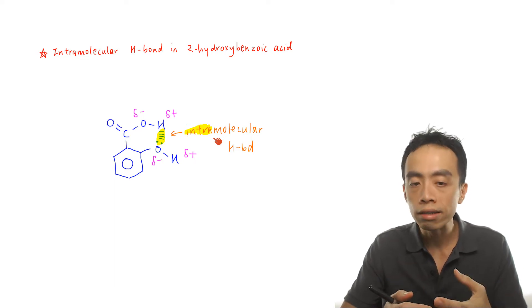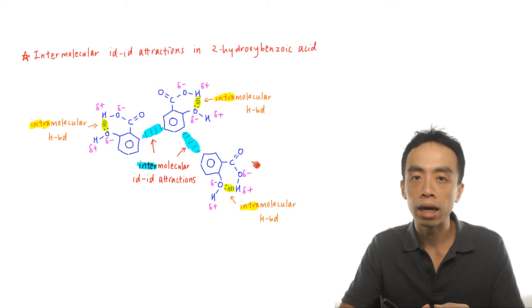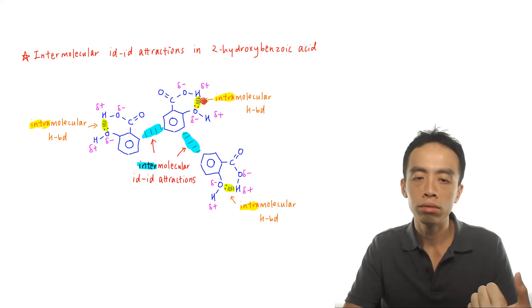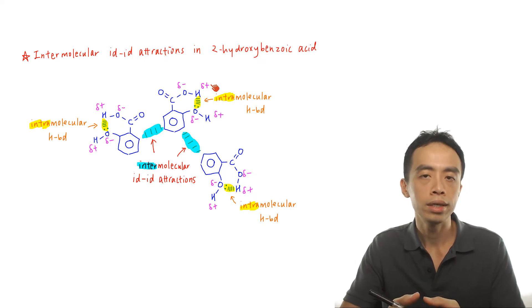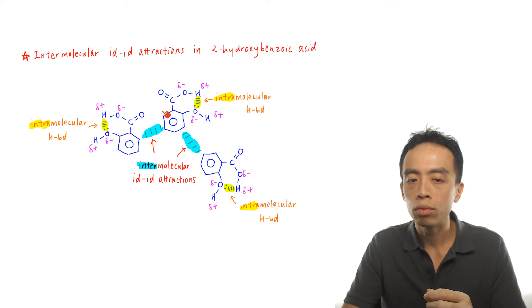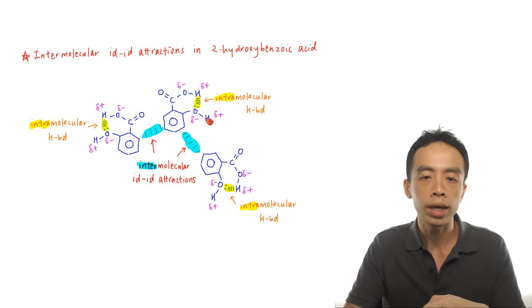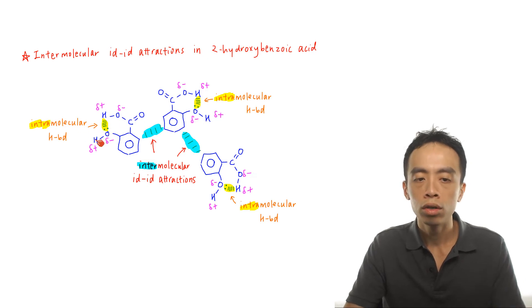The next consideration is: how does intramolecular hydrogen bonding in 2-hydroxybenzoic acid affect its melting point? We can view it this way: if 2-hydroxybenzoic acid has intramolecular hydrogen bonds, then those hydrogen bonds are used up for interaction within the molecule, so they are not available for intermolecular interaction between molecules. The hydrogen bond can only be used once — if it is used up within the molecule, it cannot be used for interaction between molecules. So between one 2-hydroxybenzoic acid molecule and another, the hydrogen bonding is used up.